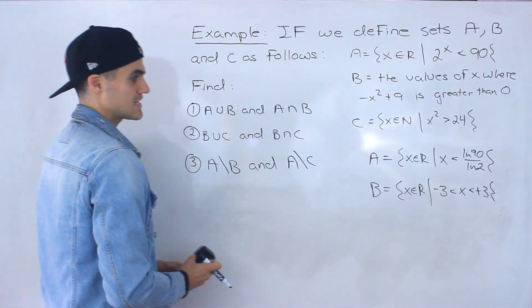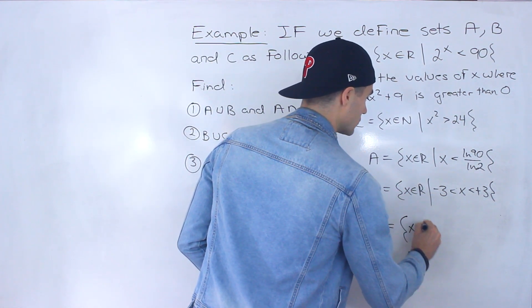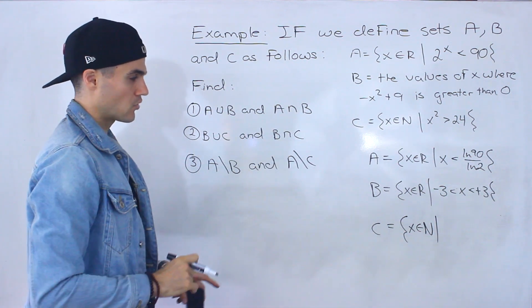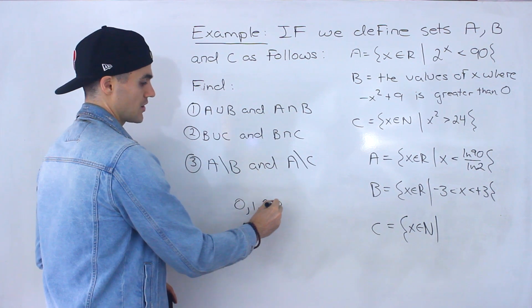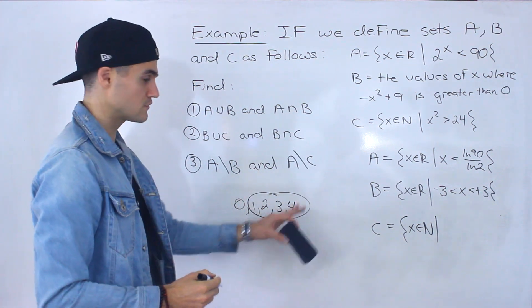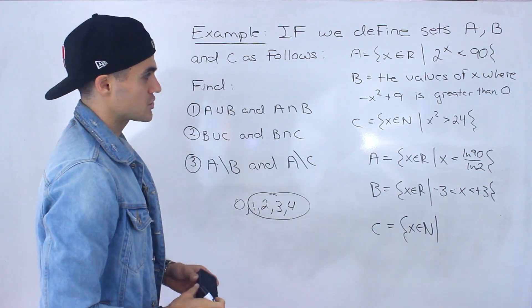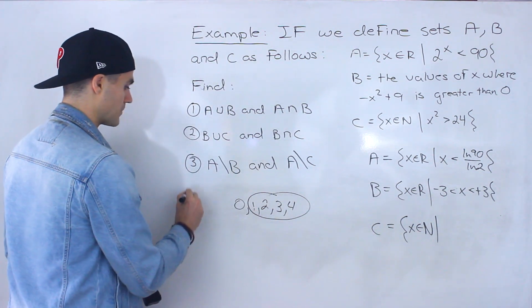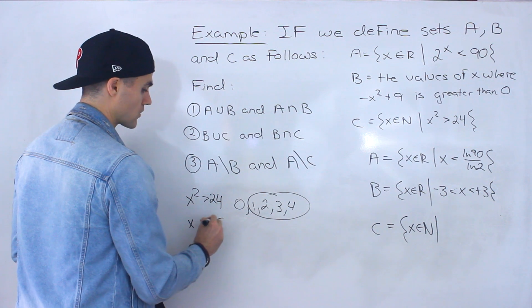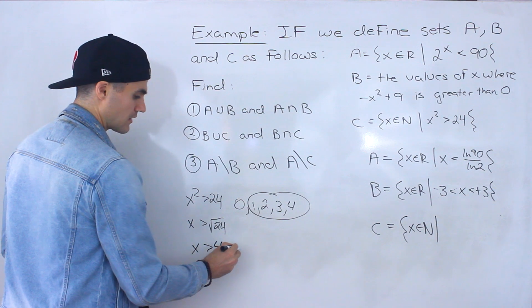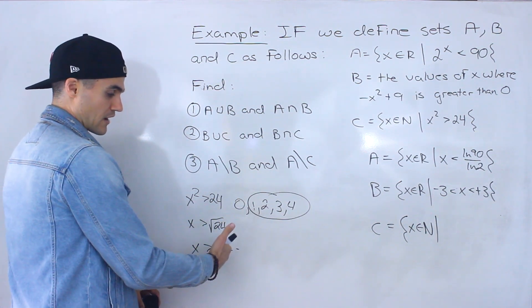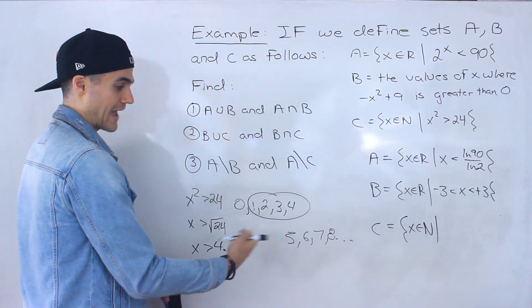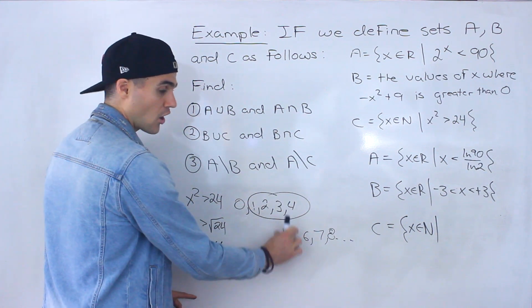And then set C — we're told that x is an element of natural numbers, so natural numbers being 1, 2, 3, 4, 5 — basically all the positive integers. Some professors include 0 as a natural number; I personally don't, I just include the positive integers. But in this case that distinction doesn't matter, because we're told that x is an element of natural numbers where x squared has to be greater than 24. So x squared greater than 24 is like x being greater than the square root of 24, and the square root of 24 is 4 point something. So all the x values greater than 4 point something — that's going to be 5, 6, 7, 8, etc. All the natural numbers greater than the square root of 24, which would start at 5.